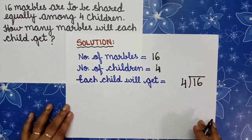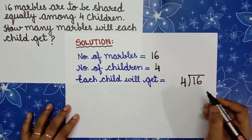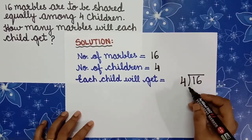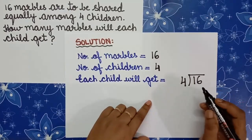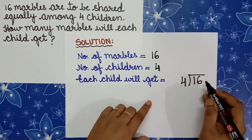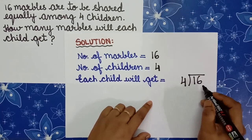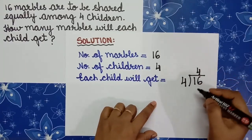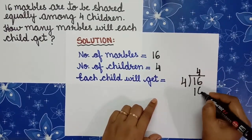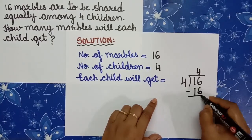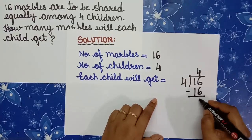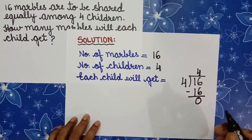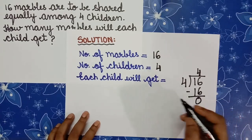And find which tables we have to recite. We have to recite the table of 4. How many times 4 goes in 16? 4 ones are 4, 4 twos are 8, 4 threes are 12, and 4 fours are 16. So 4 goes in 16 four times. Write 4 above 16 and write 16 under 16. And subtract. Subtract 16 minus 16. We are getting 0. So the answer is: each child will get 4 marbles.